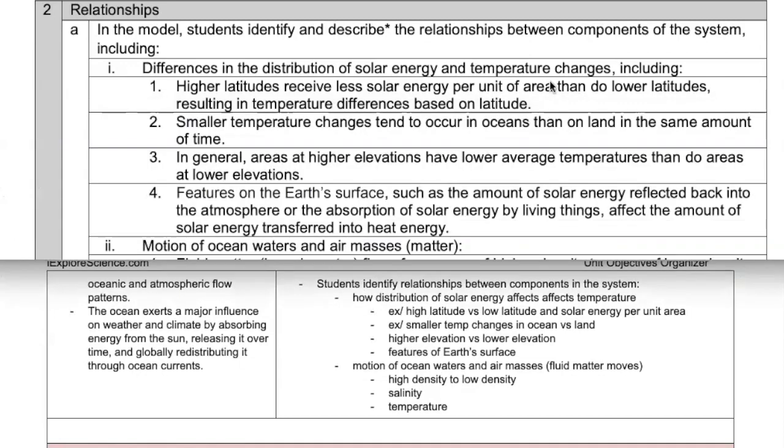So students identify relationships between components. That's like my heading here. These are the relationships I want my students to see. So for example, how distribution of solar energy affects temperature. I just wanted to rephrase this part here. It made sense to me to just rephrase it as how distribution of solar energy affects temperature. And I might use something along those lines in wording in my actual objectives with my students too. Higher latitudes receive less solar energy. That's really long. I just simplified it as high latitude versus low latitude and the solar energy per unit area. This is giving me an idea of this is one lesson or one activity, one exploration we're going to have to do because students are going to have to figure out how latitude affects the solar energy per unit area and how that then affects temperature.